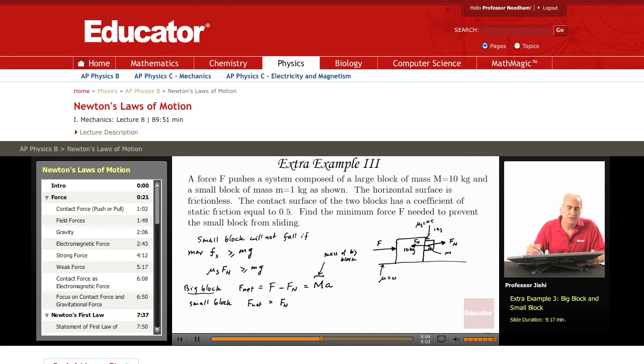I have the force of static friction up, but the assumption, if it doesn't fall, if it doesn't slide, it means that F_s, the force of static friction, is equal to mg. So the net force on it will be just F_n, and this must equal to mA.